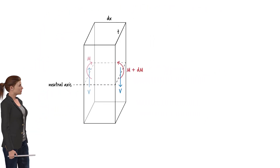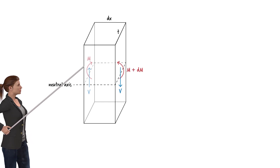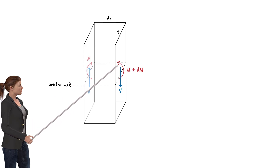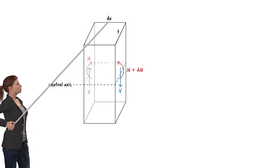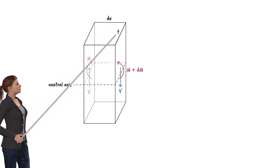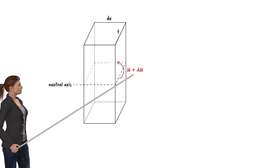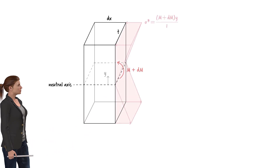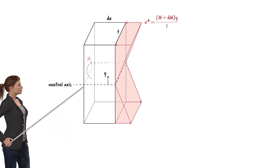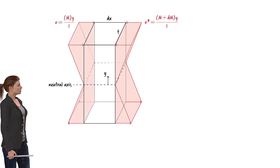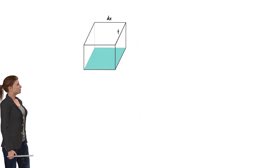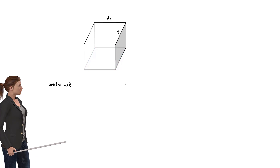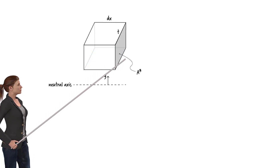Suppose this is our beam segment. The segment is subjected to a clockwise bending moment of M on the left side, and a counterclockwise moment of M plus dM on the right side. There is also a shear force of V on each side of the segment. The length of the segment is dx, and the thickness of the beam is t. Suppose we cut the beam segment along a horizontal surface. The upper part of the beam segment can be viewed as a rectangular prism situated at some distance from the neutral axis. Let's refer to the area of the prism along the cross-section of the beam as A*.